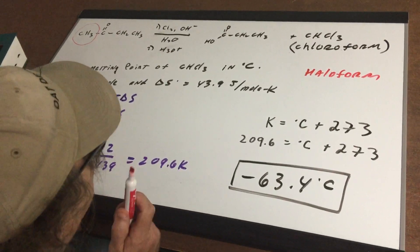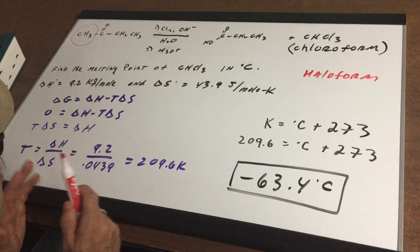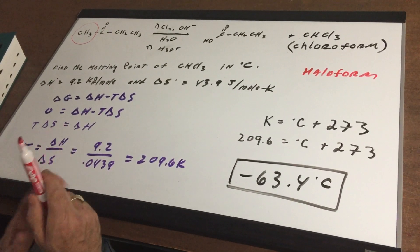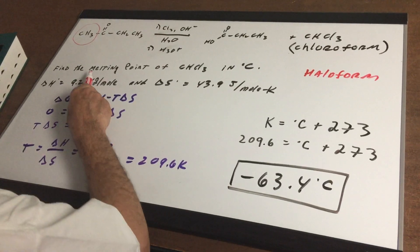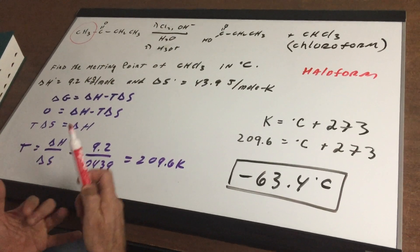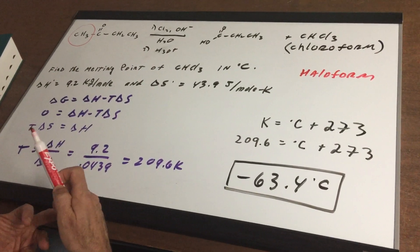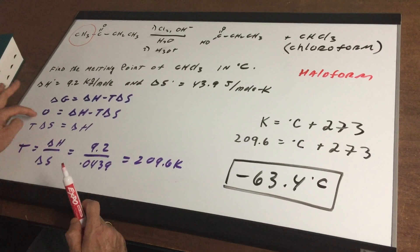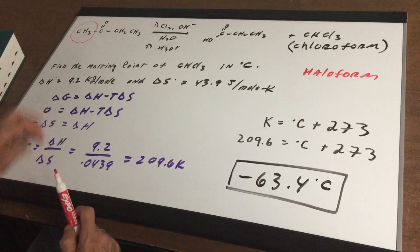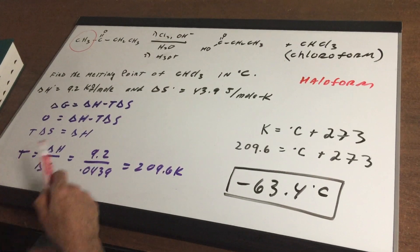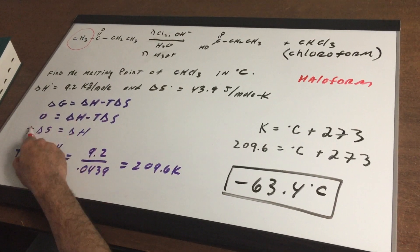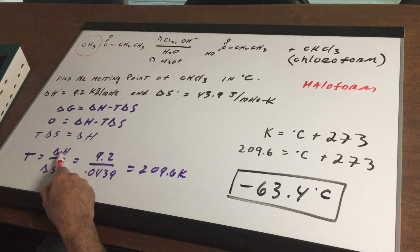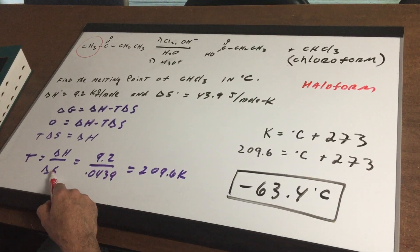Remember, delta G is the number one criteria to tell if a reaction is spontaneous. Here's the gimmick to this question: if you see the word melting point, boiling point, or freezing point, this is an equilibrium point. At equilibrium, delta G is equal to zero. So I set delta G equal to zero, bring T delta S to the other side, divide through by delta S, and get T equals delta H over delta S.